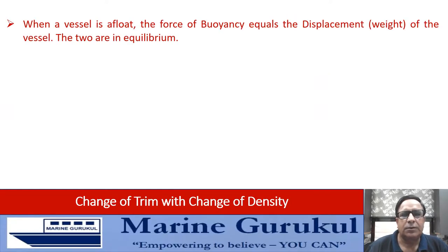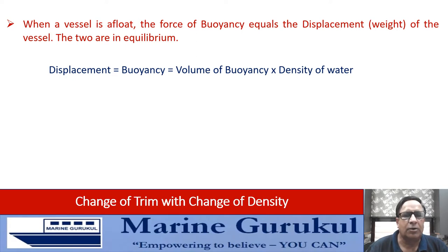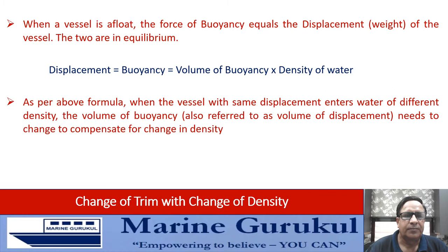When a vessel is afloat, the force of buoyancy equals the displacement or the weight of the ship. The two are in equilibrium as per the law of flotation — displacement equals buoyancy — and they are equal to the volume of buoyancy multiplied by the density of the water in which the vessel is floating. For an intact vessel, this volume of buoyancy is the same as the underwater volume of the ship.